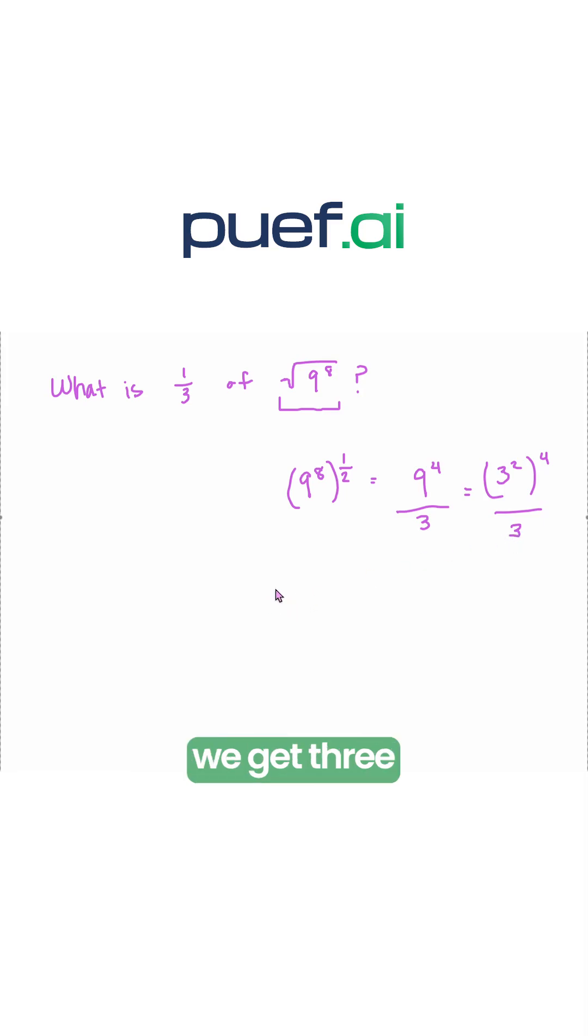So overall we get 3 to the power of 8 over 3. And this has an invisible power of 1. So when we want to simplify this with division, we just subtract our exponents. So overall, this gives us 3 to the power of 7, and that is your final answer.